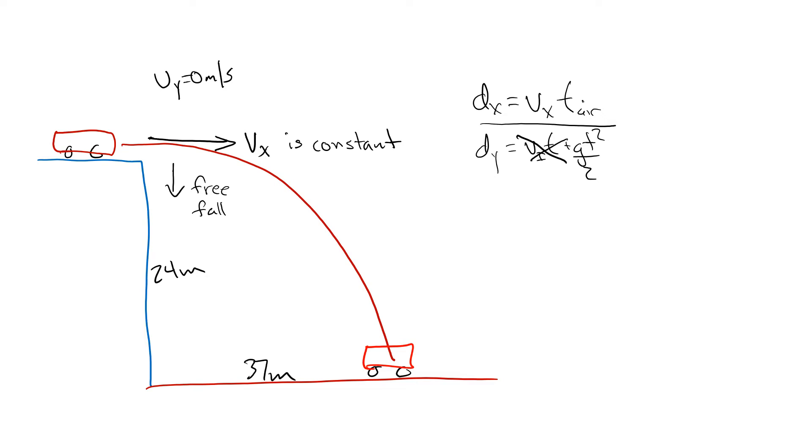So what do we know to solve this? Well we know that the distance in the y-axis is 24 meters and this 37 meters is going to be our distance in the x-axis. We are trying to find v_x, so let's isolate our equation for v_x. v_x is equal to d_x divided by the time in the air.